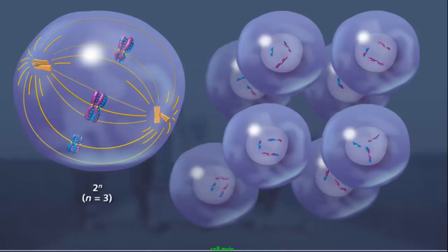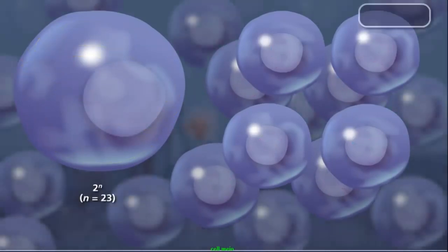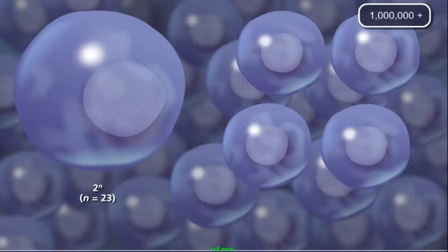This means an organism with n equals 3 can produce eight unique gametes. For humans where n equals 23, there are 2 to the 23rd power unique gametes formed, or over a million different possible combinations.